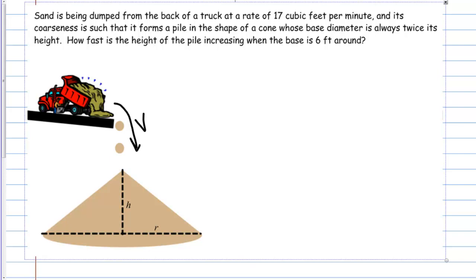Now that we have our picture set up, the next step is to write down the rates we know and the rates we're trying to find. From the first sentence, sand is being dumped at a rate of 17 cubic feet per minute. That's a rate of change of volume, so I'll call that dV/dt, and it equals 17 cubic feet per minute.